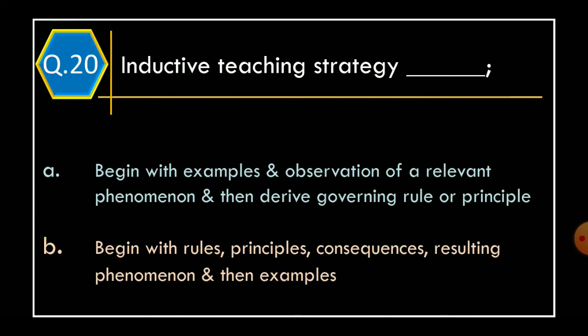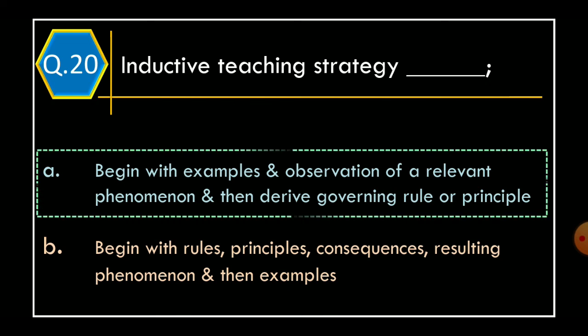Question 20: Inductive teaching strategy is — Option A: Begin with examples and observation of relevant phenomenon and then derive governing rule or principle; Option B: Begin with rules, principles, consequences, resulting phenomenon and their examples. The correct option is Option A: Begin with examples and observations of relevant phenomenon and then derive the governing rule or principles.